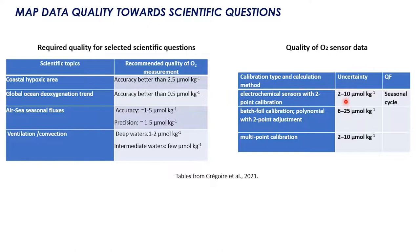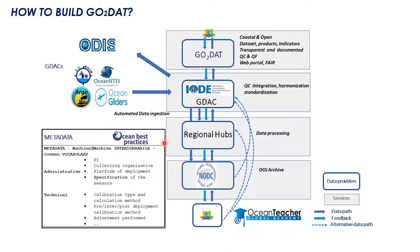The idea in GODAT would be to add a quality flagging column that reflects which scientific questions your data, at its level of uncertainty, can answer. How to build GODAT? This figure proposes a data flow for building GODAT. GODAT will rely on strong interaction with IOD, and via IOD with National Oceanographic Data Centers, regional hubs, and also with GDACs like Argo, Gliders, Oceansite, and GOOS-I. In consultation with all these actors, common best-practice metadata structure and quality check and flagging procedures will be proposed and transmitted to users via the Ocean Teacher program. The data submission system would be twofold: one centralized via the GDAC, or a bottom-up approach with direct submission to NODC.